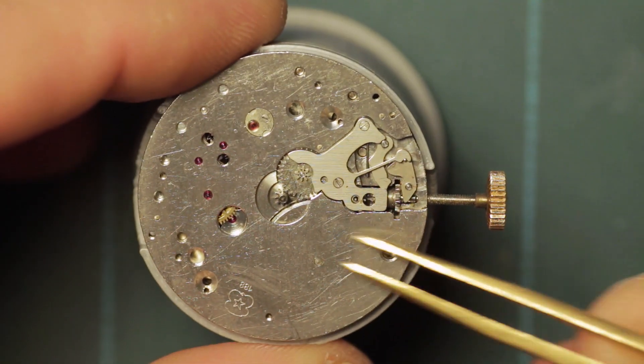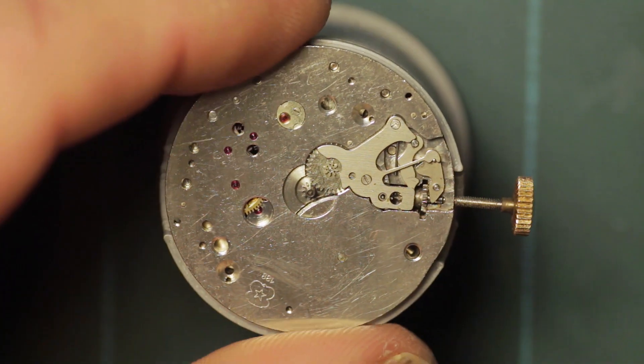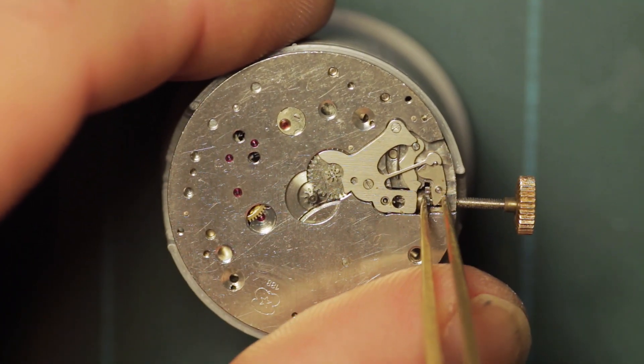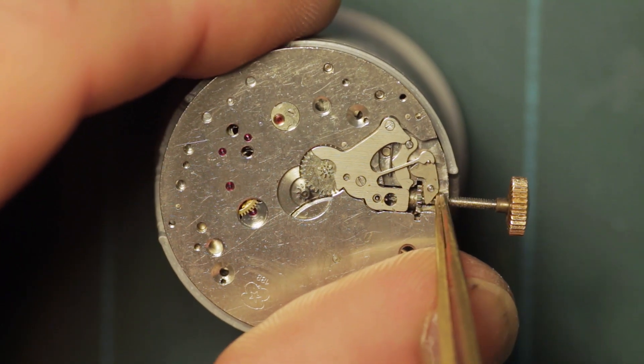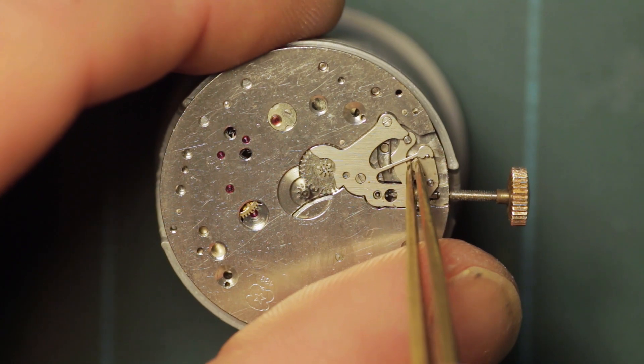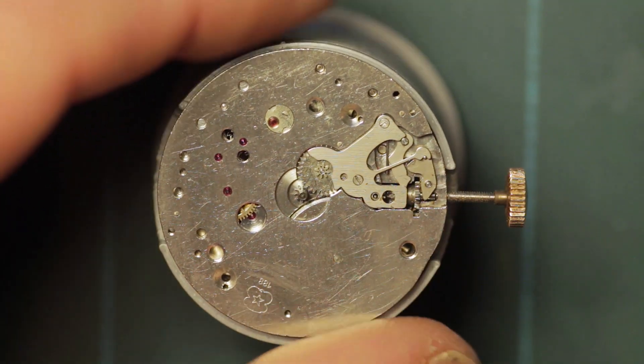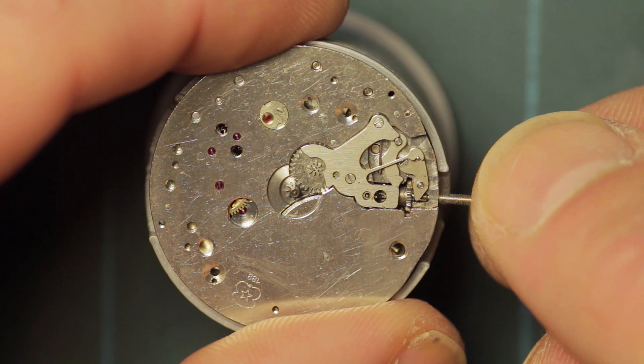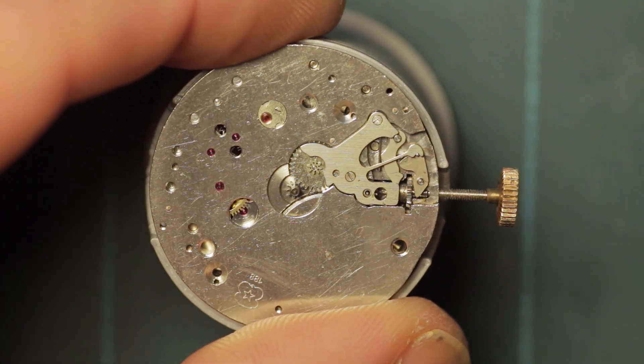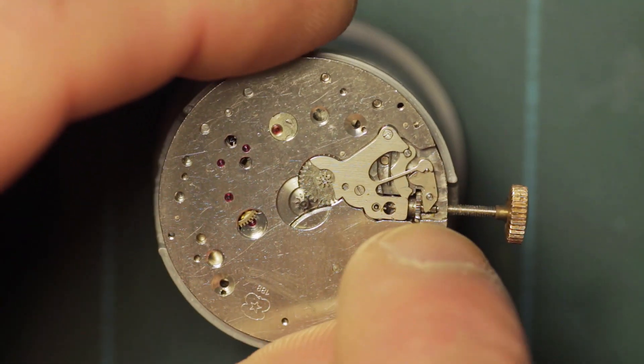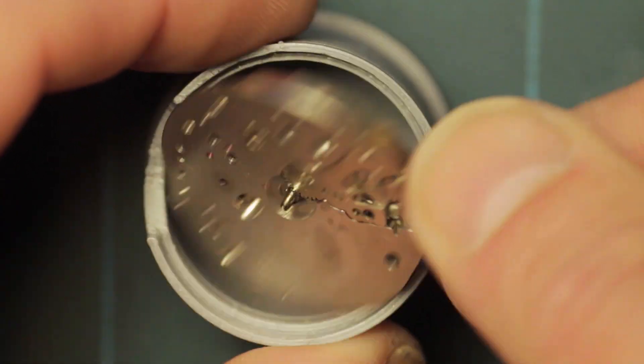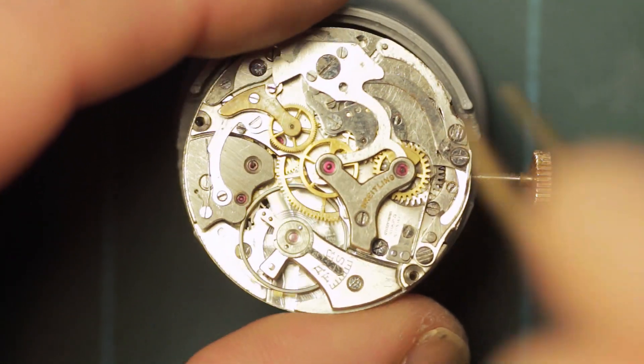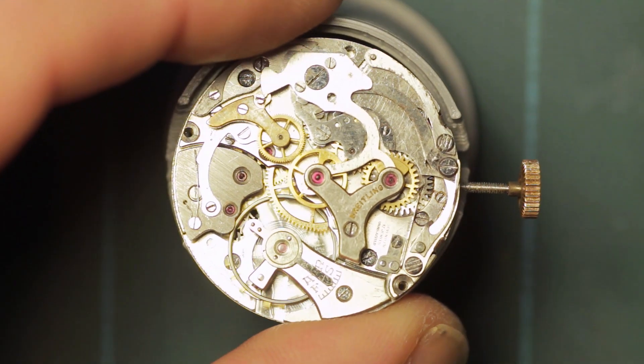Having now removed the dial and gotten into the keyless work side, it was evident initially that the setting lever just here was misplaced. It actually came out of its spring detent, and this was one of the reasons that it wouldn't seat properly. This happens quite often with setting levers if the detent, the spring detent at the back, isn't pushed in, or in this case if the screw isn't unscrewed to an adequate level.